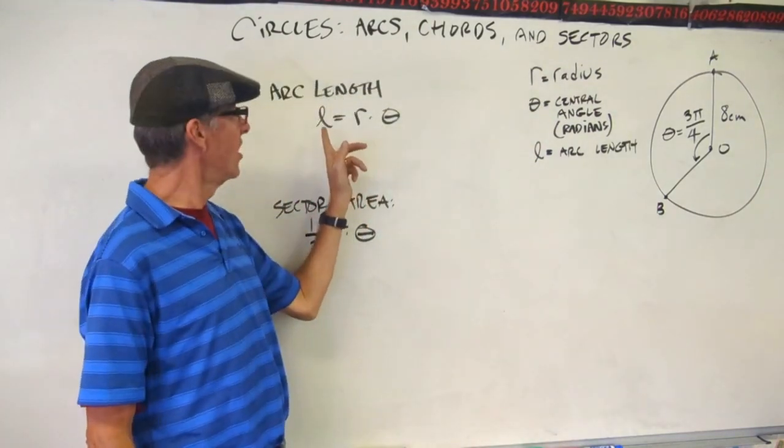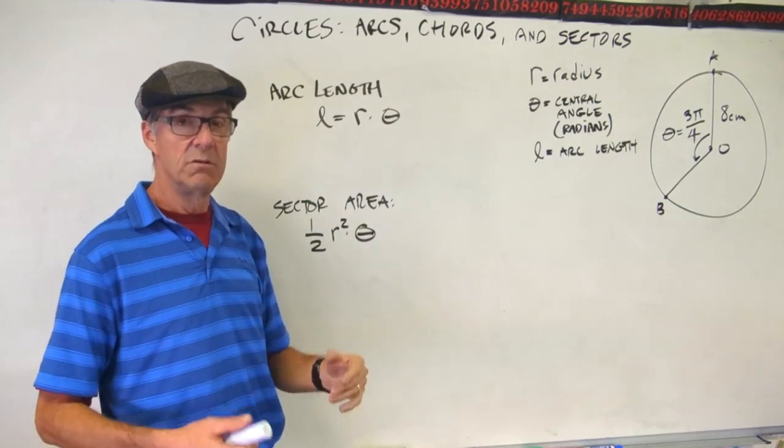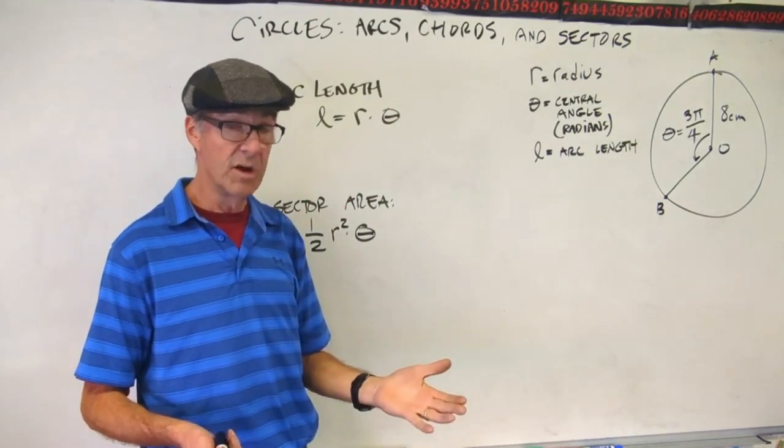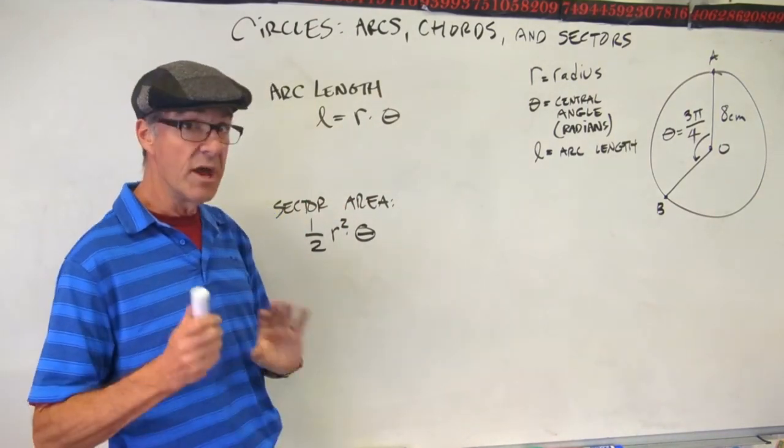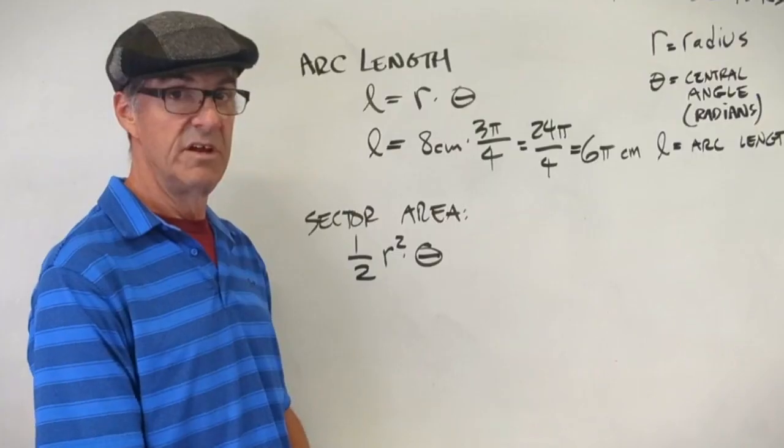If we wanted to find the length of that arc, that portion of the circumference of the circle from A to B, we use this formula. Arc length L is r theta. Pretty simple formula. It's just r theta. So go ahead and pause the video, do the plug-in, and calculate this arc length.